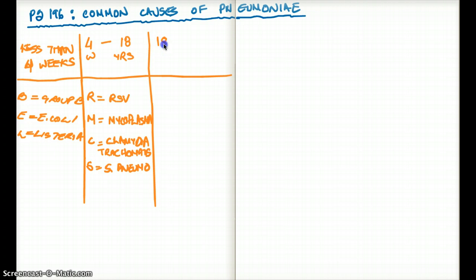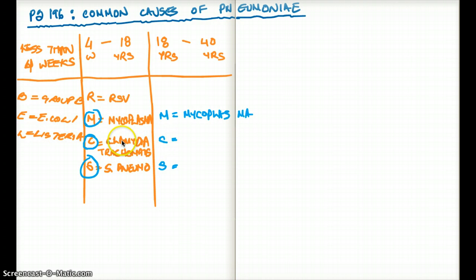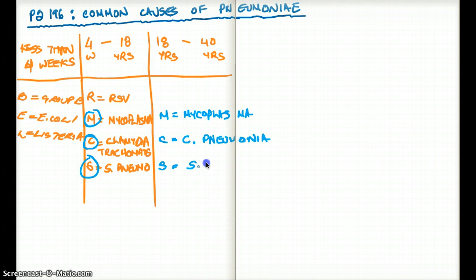Now we're going to talk about from 18 years to 40 years. You see how it says 'Runtz May Cough Sputum'? The 'May Cough Sputum' part carries over here but with one difference. M is for Mycoplasma again — no change. But C changes: the Chlamydia goes from Chlamydia trachomatis to Chlamydia pneumoniae. And S remains Strep pneumoniae — nothing changed there.